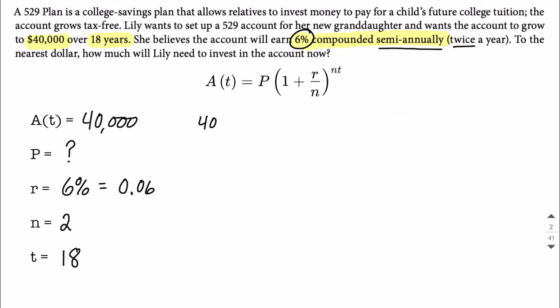It's going to be 40,000 on the left-hand side equals P times the quantity 1 plus r, 0.06, over n raised to the n, 2, times 18. We can do a little bit of simplifying down here if we want before we solve for P, but we get 40,000 equals P multiplied by, this will reduce down to 1.03, and then 2 times 18 will give us 36 as our exponent here.